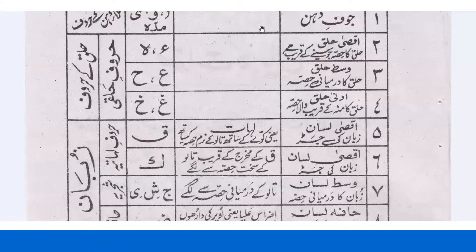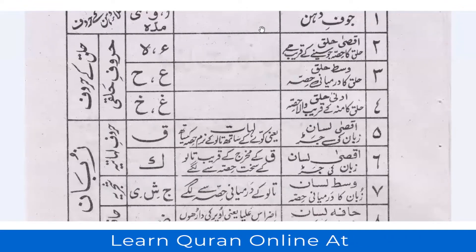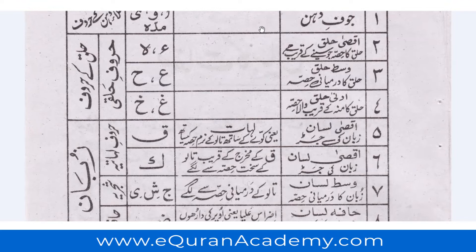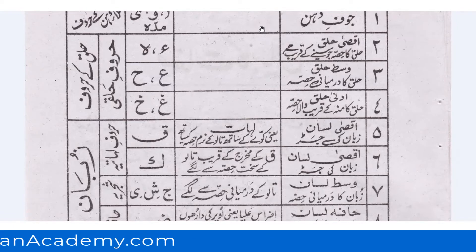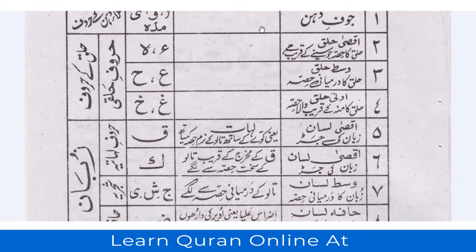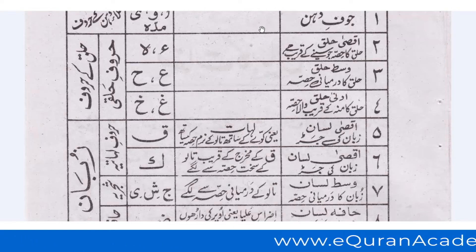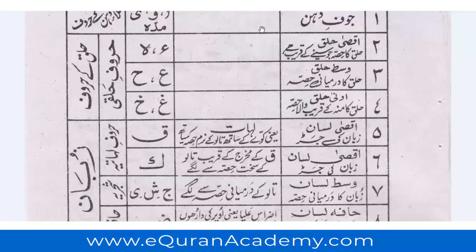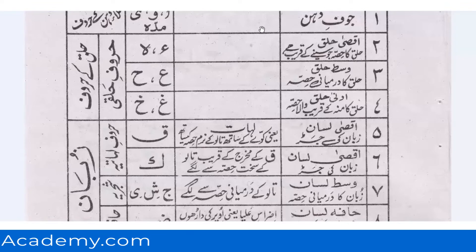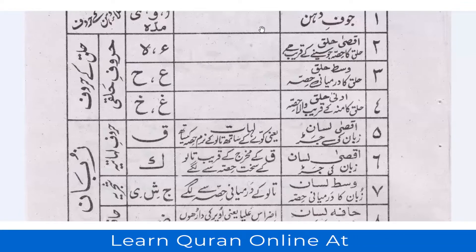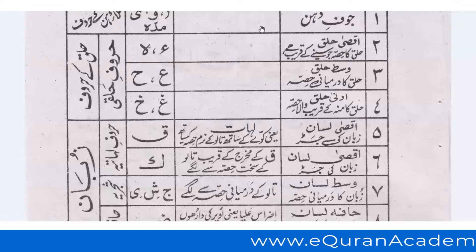Hafiz Imran, aao — aankhein band kar ke, kitaab se nahin dekhna, aur batao: makhraj number ek. Makhraj number ek jo fada hai, yaani muh ka. Bilkul theek hai. Is se kaun se huroof nikalte hain? Huroof maddah — alif, waaw, ya. Alif ke pahle waale harf par zabar ho, waaw saakin se pahle waale harf par pesh ho, ya saakin se pahle waale harf par zer ho. Yeh aap ne achhi tarah yaad kar lein.